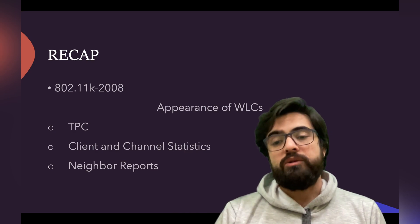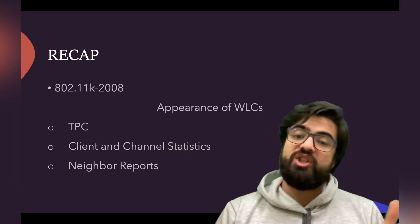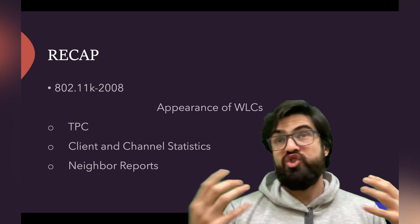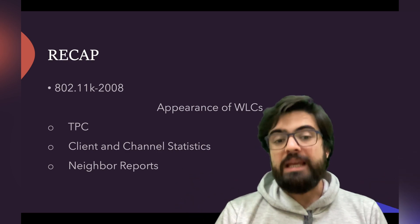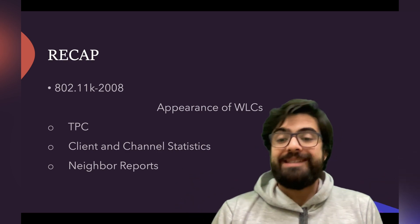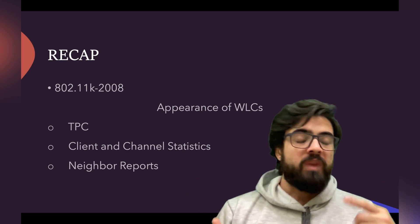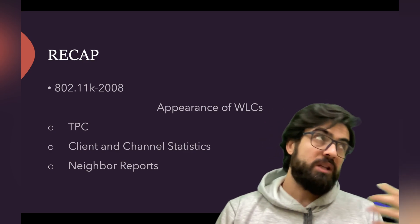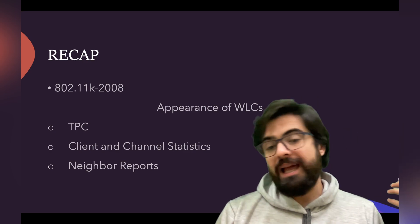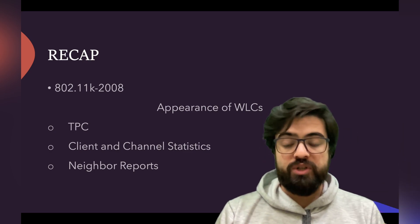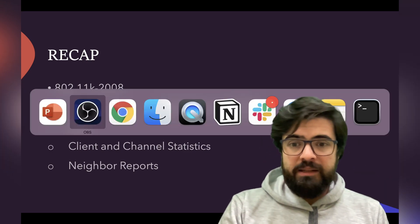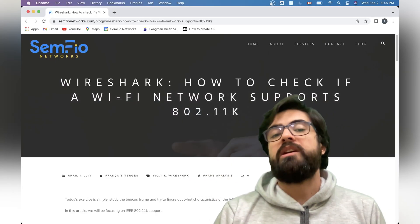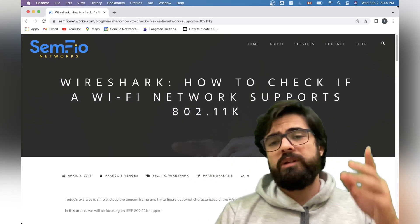To recap, the 802.11k amendment, which appeared in 2008, represents a foundation for WLAN controllers. It covers four areas: TPC, client statistics, channel statistics, and neighbor reports. Now let's look at a practical example using a Wireshark capture from the Zenfire blog.